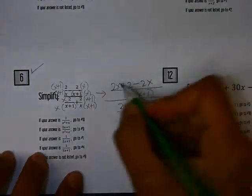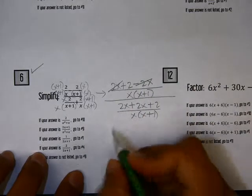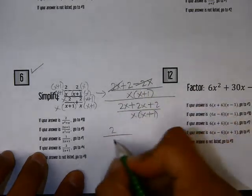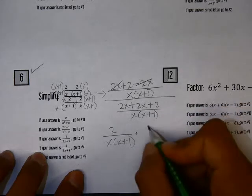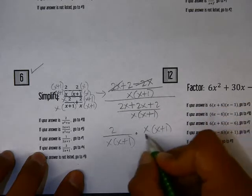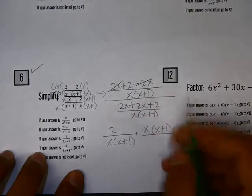So if we simplify here, 2x minus 2x is 0, so that's 2x, or just 2, over x times x plus 1, multiplied by, if I do reciprocal of this, I get x times x plus 1, over 4x plus 2.